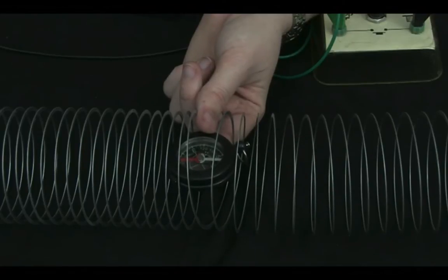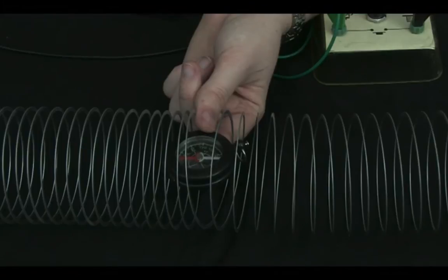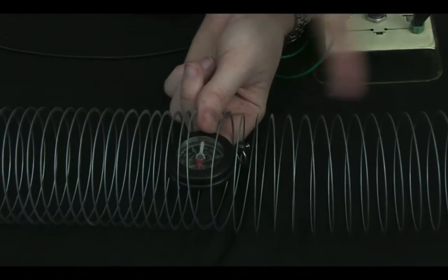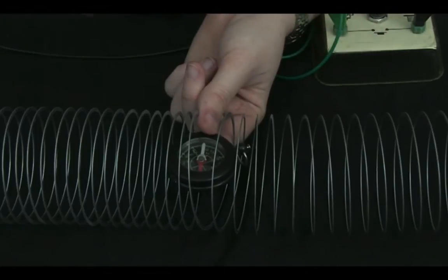You can see the compass needle deflects to point along the slinky. This shows us the direction of the magnetic field lines going along the slinky.